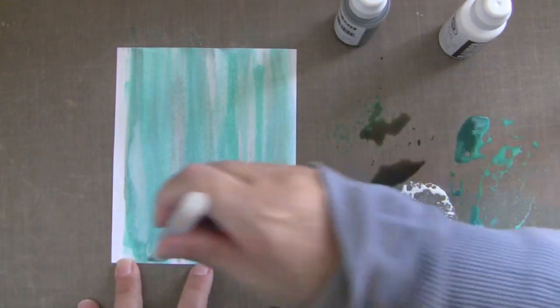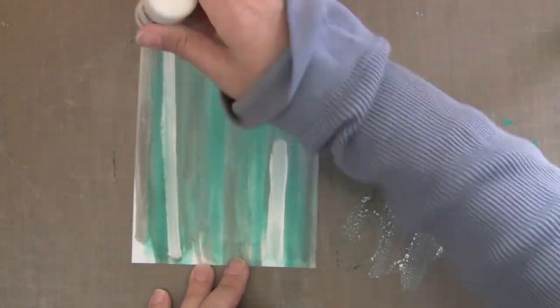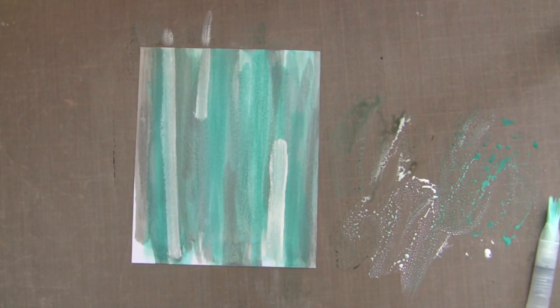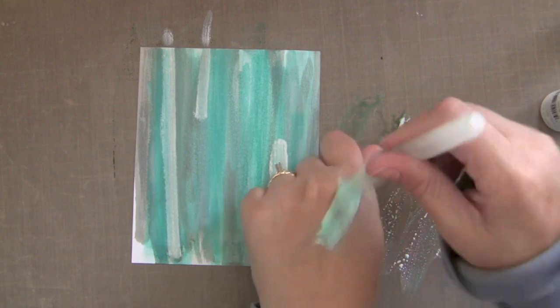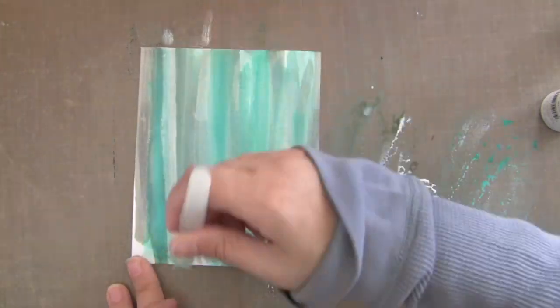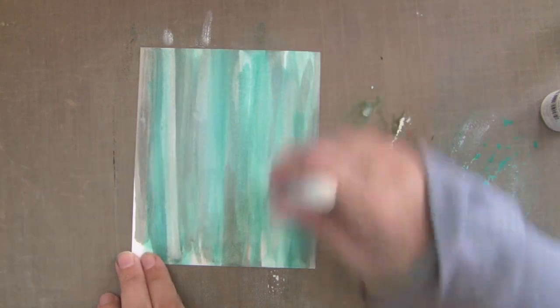And just until you get it how you like it. So I think this is pretty good but it kind of needed softening. So here I'm going in with just the white dauber by itself. And then I'm going to clean my brush off on the back of my hand here. And then just go over the white to soften that even more.